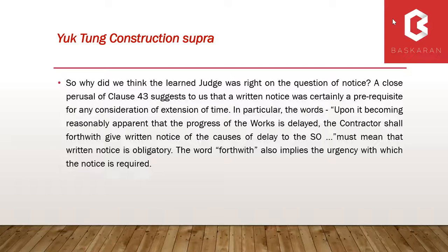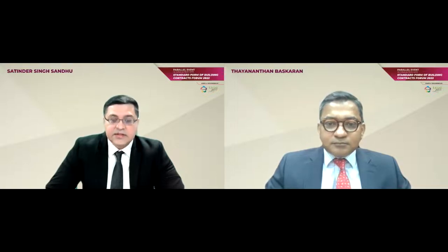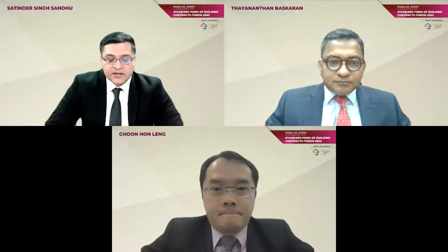Just to add on to what Tayan said: another interesting point on extension of time in the new PAM 2018 is Clause 23.4, where architects are now required to provide reasons for rejecting the contractor's EOT submissions. When the architect issues a certificate of extension of time, he needs to provide details within six weeks from receipt of sufficient particulars from the contractor. This is a good change as it avoids ambiguity and arguments about why the architect rejects the contractor's applications, and likewise if he grants extension of time, he needs to provide necessary details.